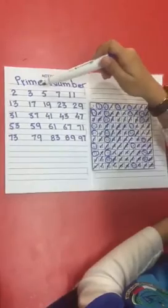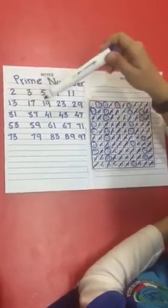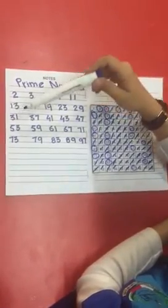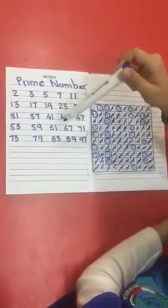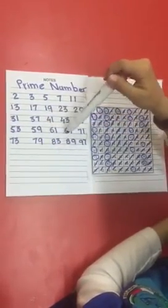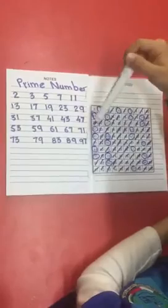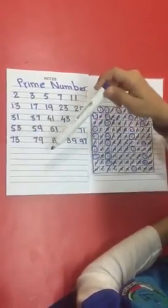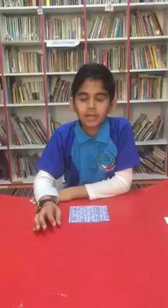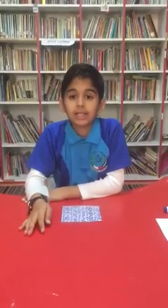The prime numbers between 1 and 100 are: 2, 3, 5, 7, 11, 13, 17, 19, 23, 29, 31, 37, 41, 43, 47, 53, 59, 61, 67, 71, 73, 79, 83, 89, and 97. Now you know the prime numbers and it's easy for you to find them. Thank you and bye bye!